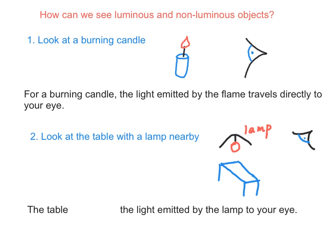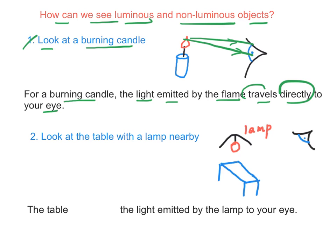Let's see how can we see luminous and non-luminous objects. First, when you look at luminous objects such as a burning candle, the light emitted by the flame travels directly to your eyes, so that you can see the flame or you can see the candle.